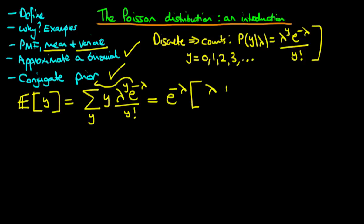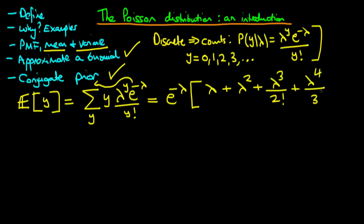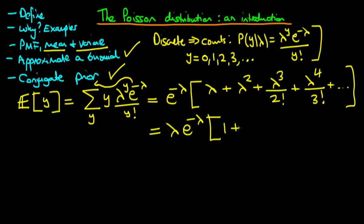When y equals 2, we get 2 times lambda squared divided by 2 factorial — the 2s cancel, leaving lambda squared. For y equals 3, we get 3 times lambda cubed divided by 3 factorial — the 3s cancel, leaving lambda squared over 2 factorial... wait, leaving lambda cubed over 2 factorial. Continuing, for lambda to the power 4 we get lambda to the 4 over 3 factorial. We then factor out a common lambda, giving lambda times e to the minus lambda times the series 1 plus lambda plus lambda squared over 2 factorial plus lambda cubed over 3 factorial and so on.